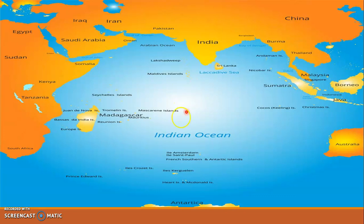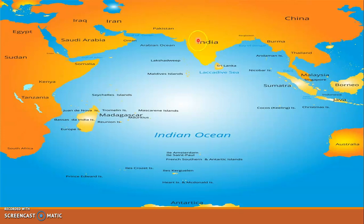This geographic arrangement — the complete blockage of the Indian Ocean towards the north — has led to the development of a monsoon type of climate over the Asian and Indian continent.